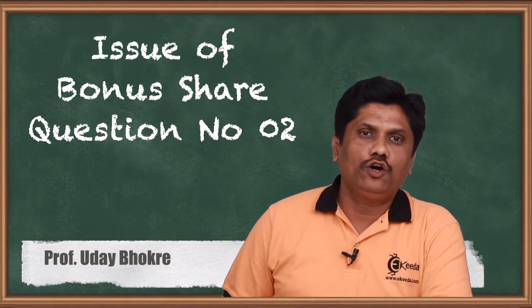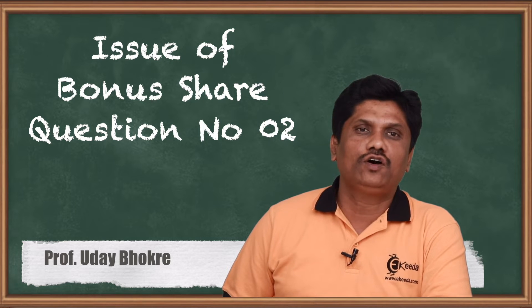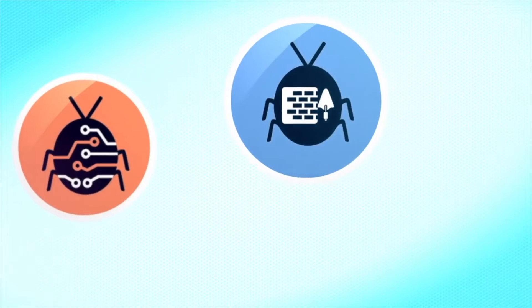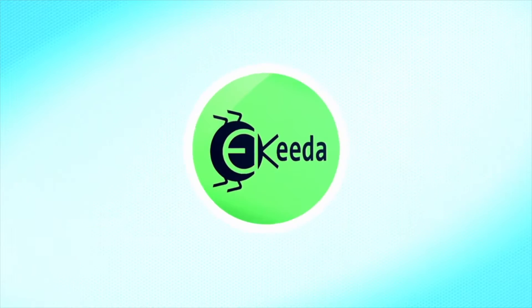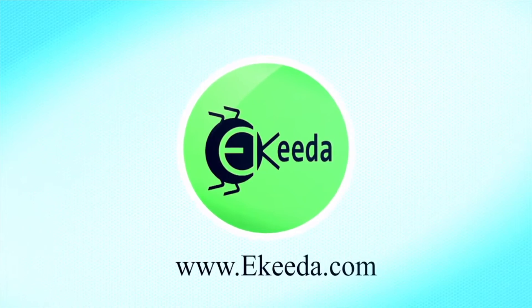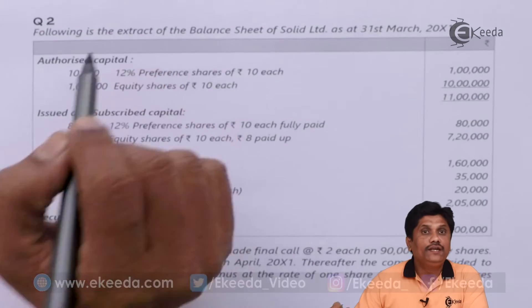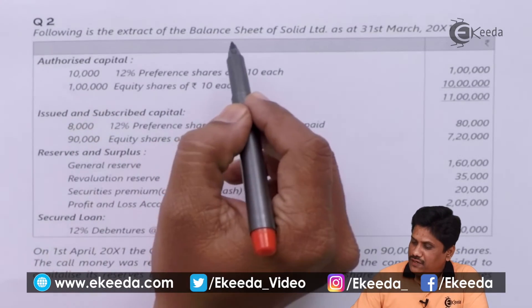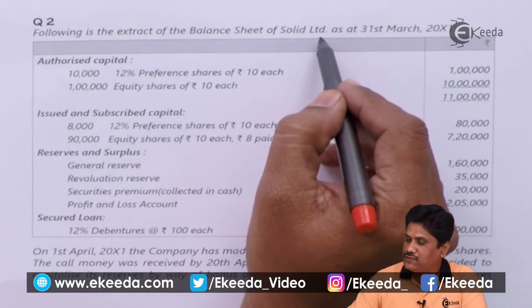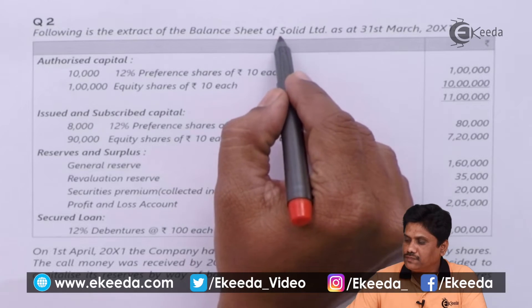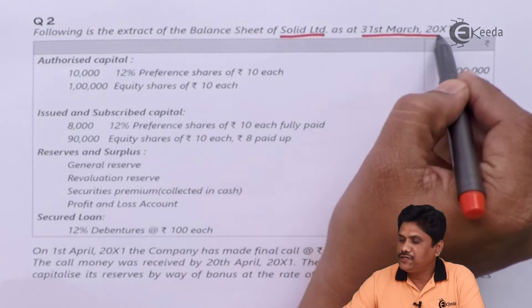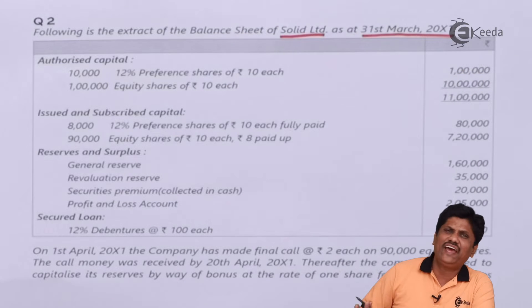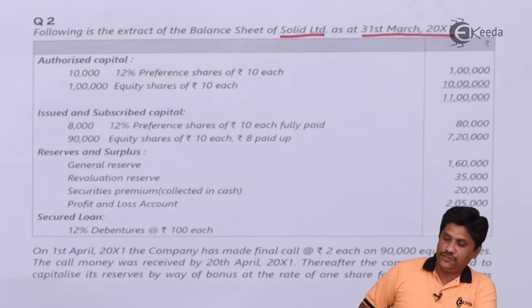Friends, today we are going to learn for Class 12 Accountancy subject, topic: Issue of Bonus Shares, Question Number 2, which is on your screen. Let's read the question. Following is the extract of the balance sheet of Solid Limited on 31st March 2000 X1. It is the extract of the balance sheet, not the complete balance sheet.